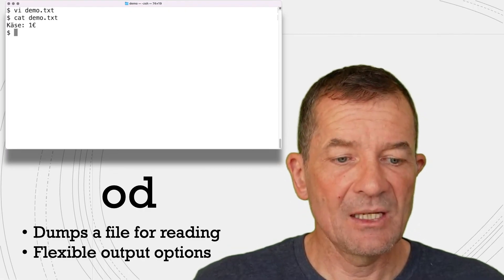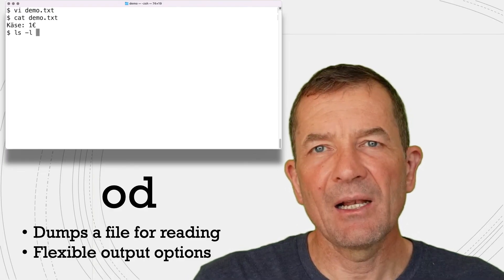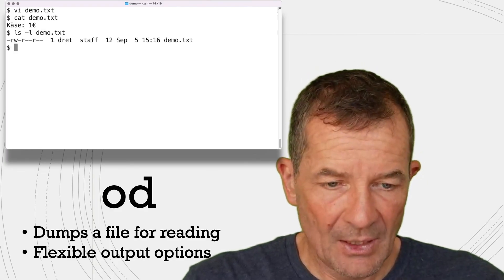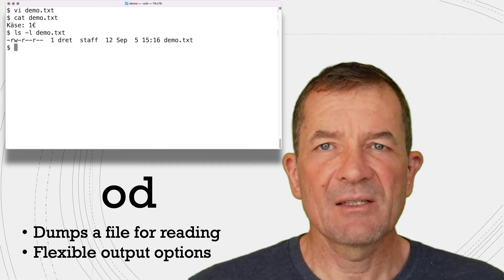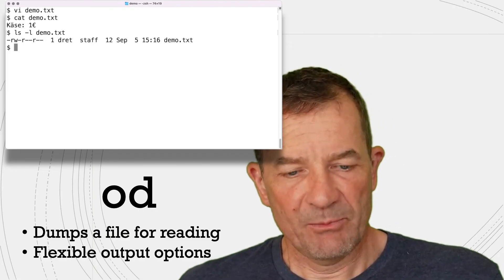So if we look at this, then you can see, okay, we have eight characters in this text. And when we look at this file in the file system, then you can see that it takes up 12 bytes. Eight characters, but it takes up 12 bytes.